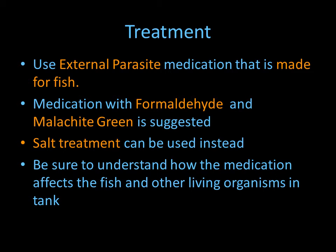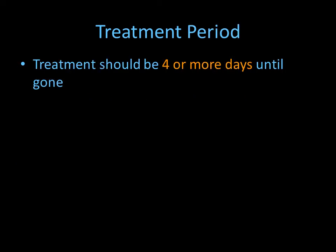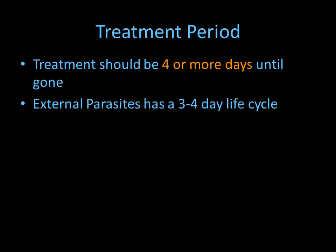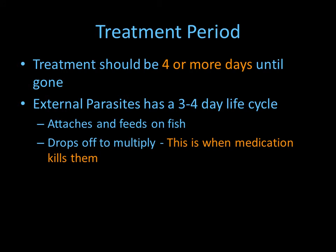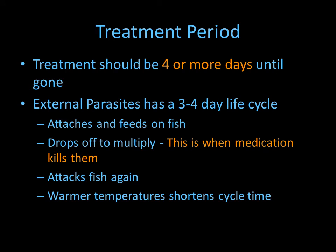The treatment period is usually four or more days. The reason is that external parasites have a three to four day life cycle — they initially attach to your fish, feed on it, grow, then drop off to multiply. This is when the medication kills them. If they aren't killed, they attack the fish again, so you have to continue treating until all parasites are gone.